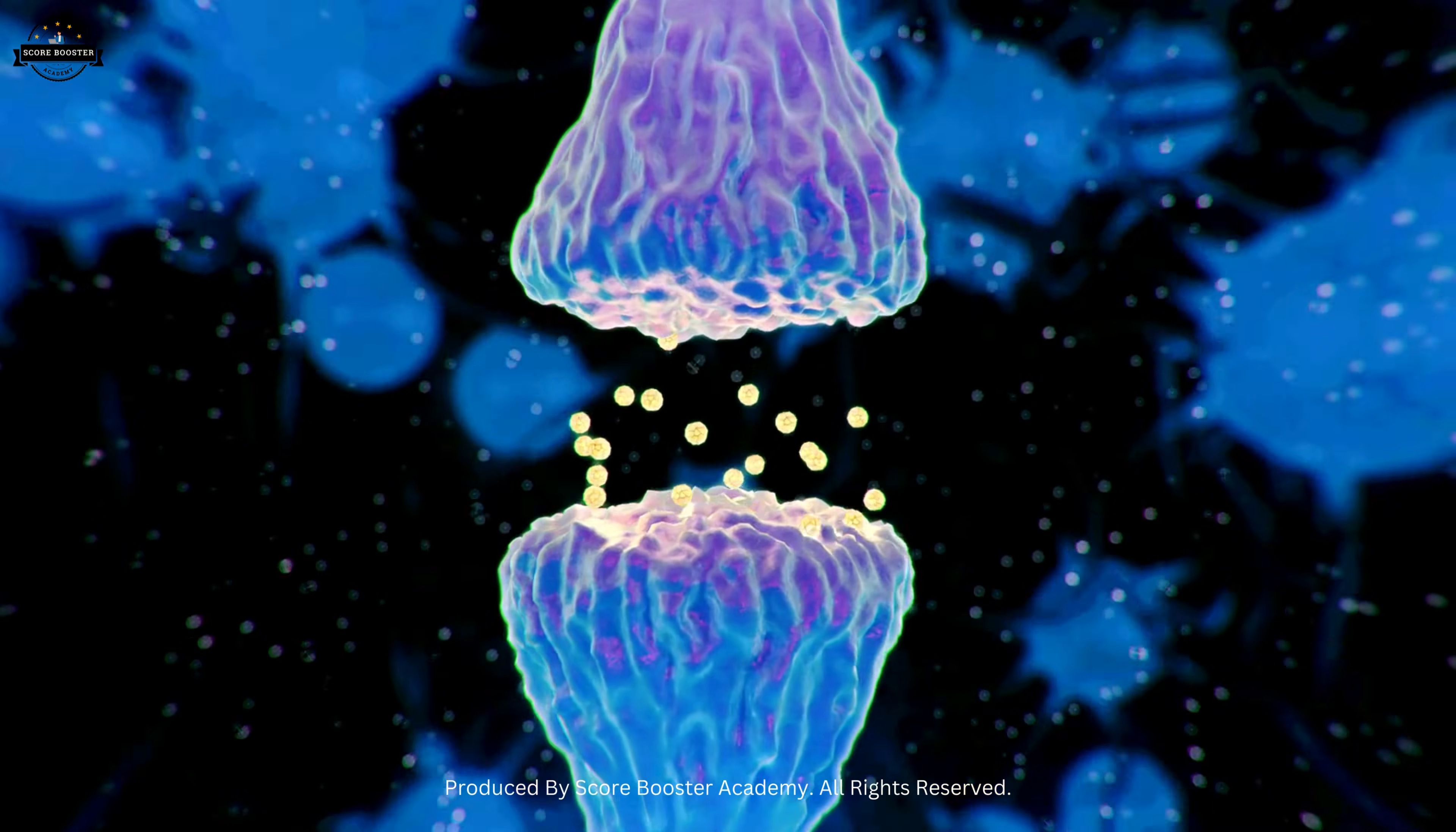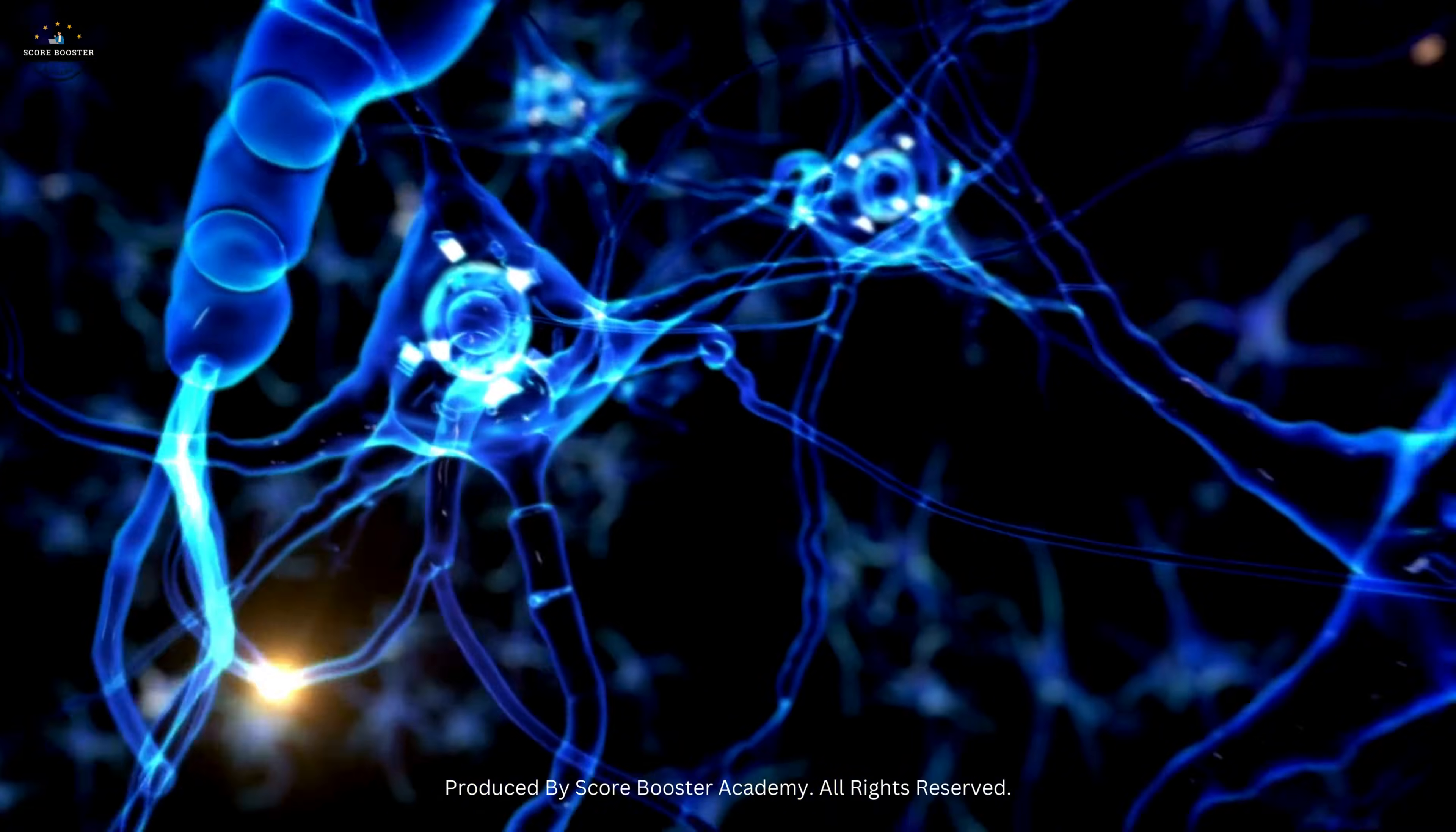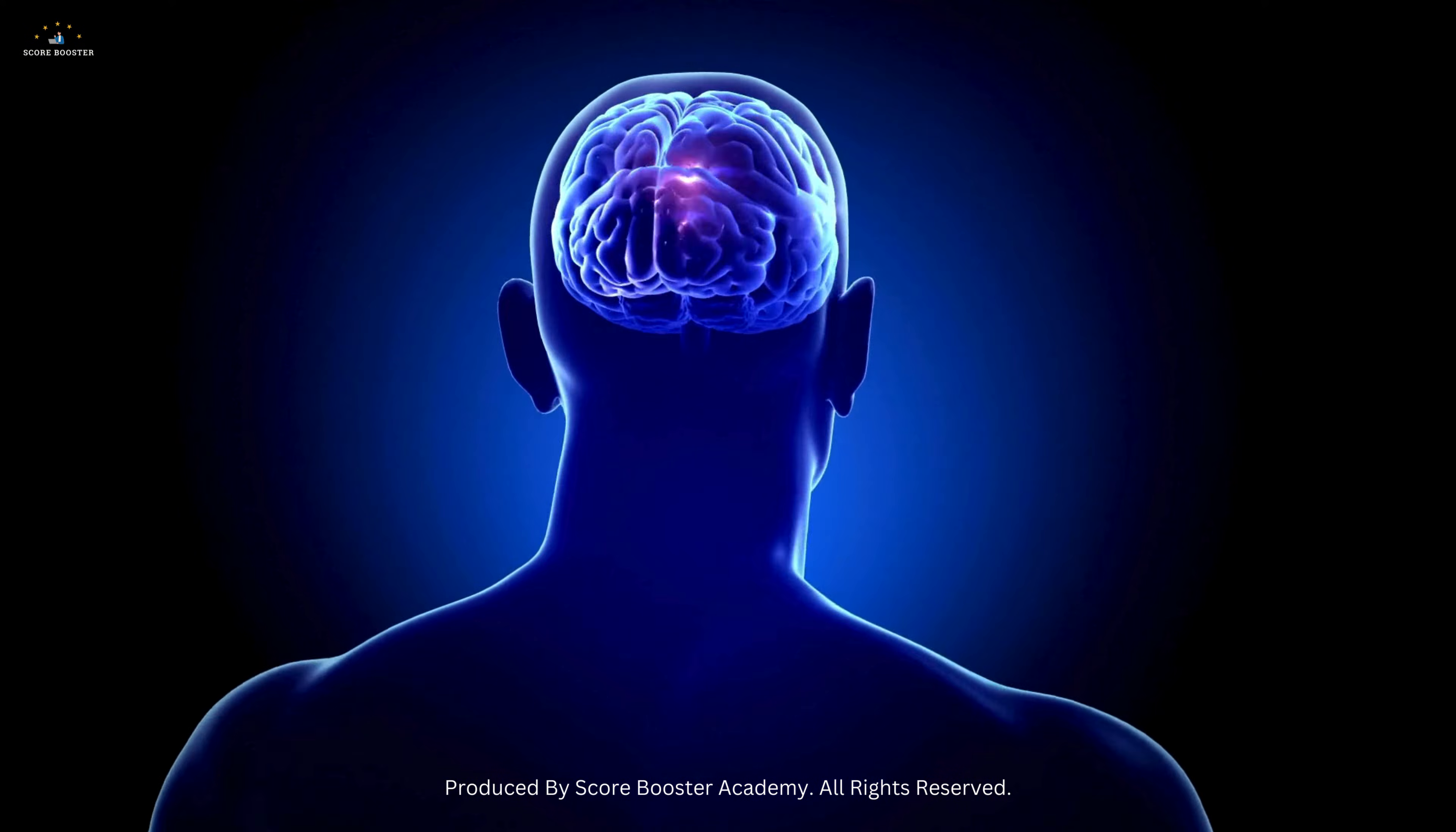Think of neurotransmitters as tiny messengers. For instance, dopamine is a neurotransmitter associated with pleasure and reward. This intricate dance of neurons and neurotransmitters enables every thought, emotion, and action, illustrating the nervous system's profound impact on our daily lives.